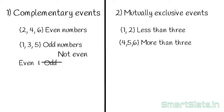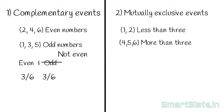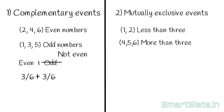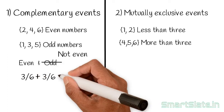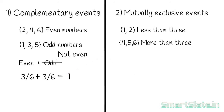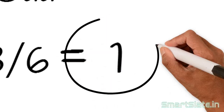The probability of getting an even number is 3/6, since there are 3 even numbers in the sample space. Similarly, the probability of getting an odd number is 3/6, since there are 3 odd numbers. Adding the two probabilities gives 1. Note: the sum of probabilities of complementary events is always 1.